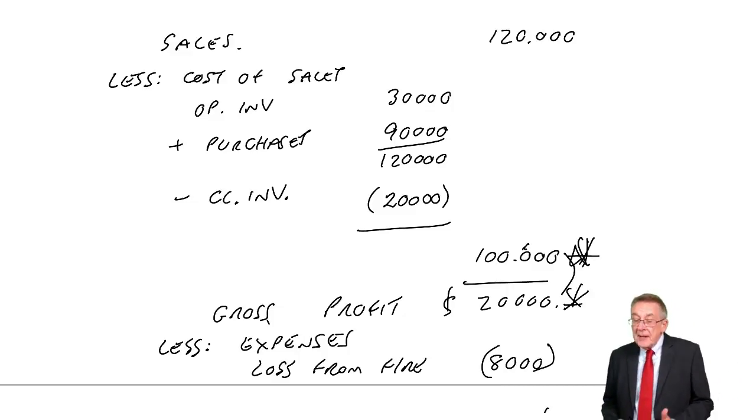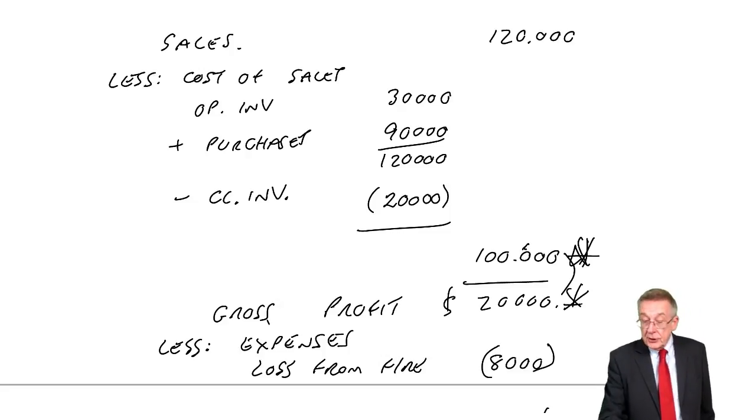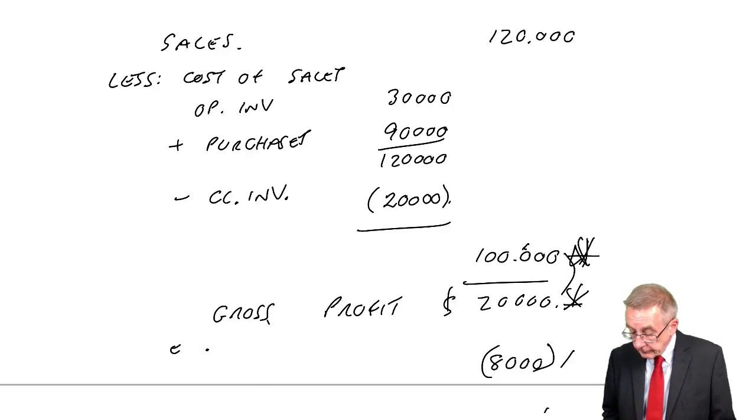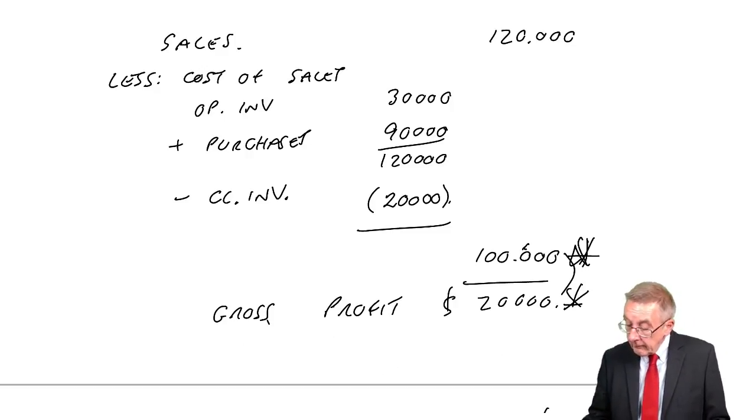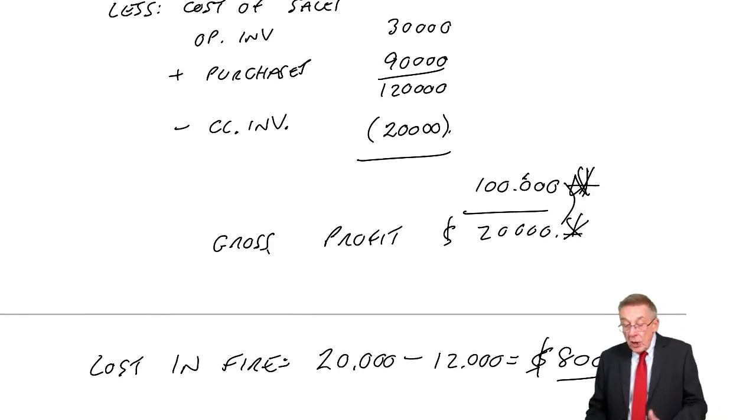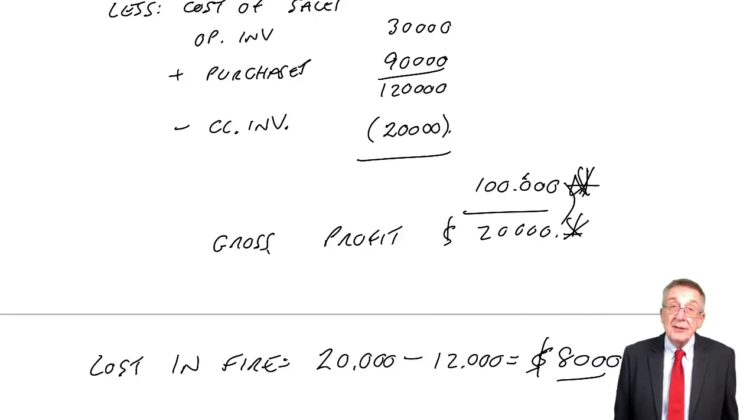The loss, 8,000. And of course, on the statement of financial position, we'd show the inventory as 20 less 8. We would show the actual inventory of 12,000. However, that's a minor point. In most questions, all we're concerned about is what was the loss. Work out what the inventory should have been using your markup or your margin, whichever you're given. Compare with what the inventory actually was, the difference is what we lost.